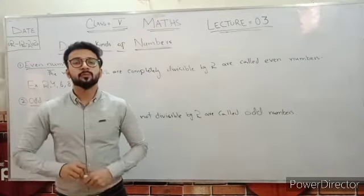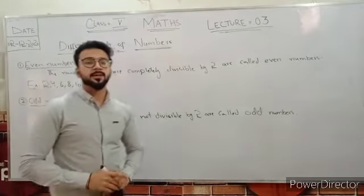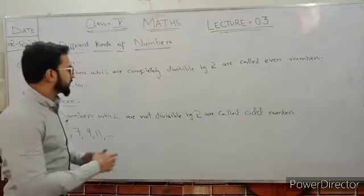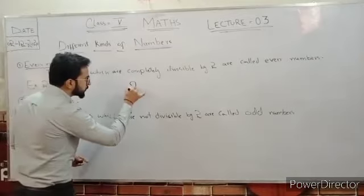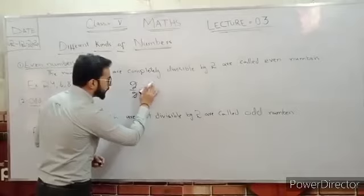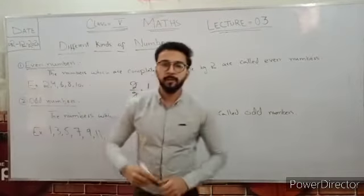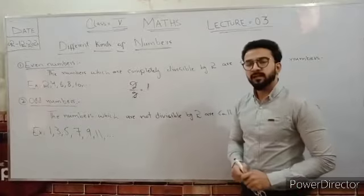But again, we have to say that the numbers which are completely divided by 2 are called even numbers. For example, 2 divided by 2. This is the answer, that is 1. So it means that's completely divided by 2. So it's called even numbers.